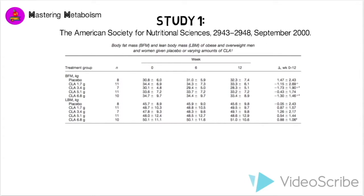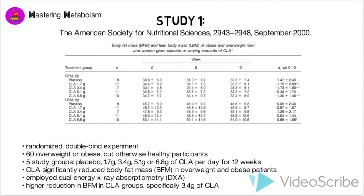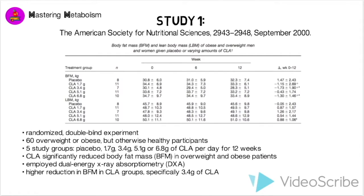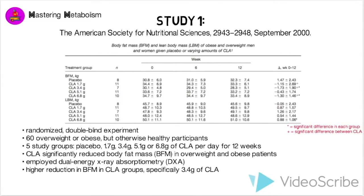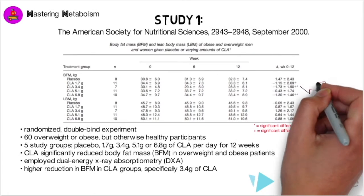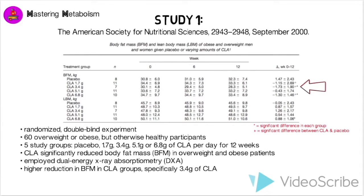The study conducted was randomized, double-blind, and consisted of 60 overweight or obese but otherwise healthy participants. The volunteers were divided into five groups: placebo, 1.7, 3.4, 5.1, or 6.8 grams of CLA per day for 12 weeks. A dual-energy x-ray absorptometry, or DXA, was used to measure body composition. The study found a higher reduction in BFM in groups consuming CLA compared to the placebo group, with a decrease found to be significant for the 3.4 and 6.8 grams CLA groups. This suggests that CLA can reduce BFM in humans and that no additional effect can be achieved with doses greater than 3.4 grams.